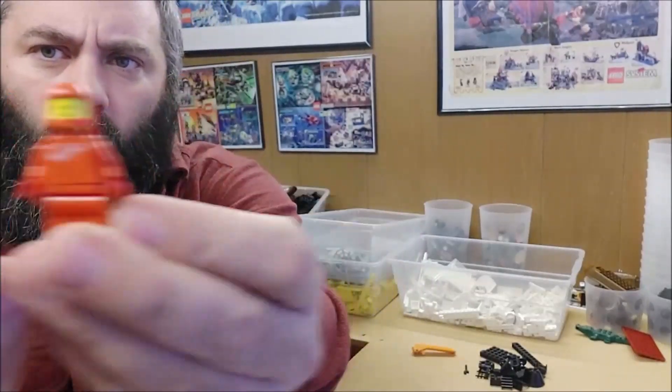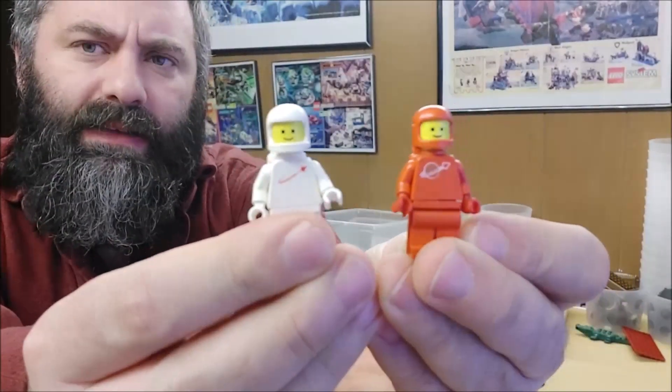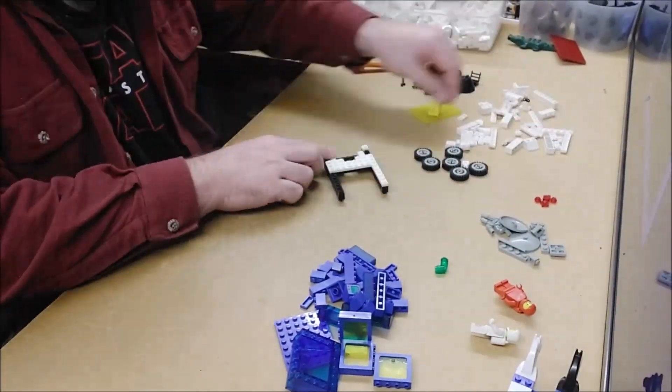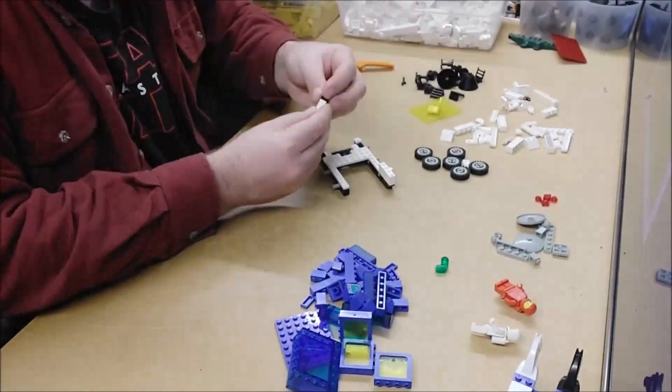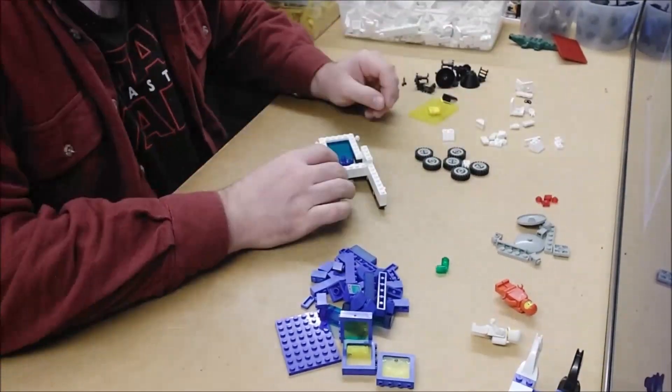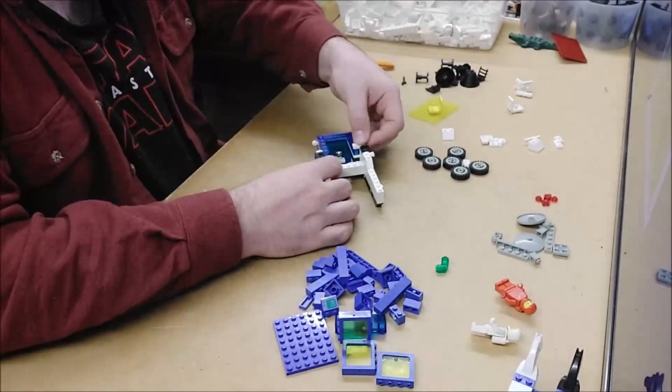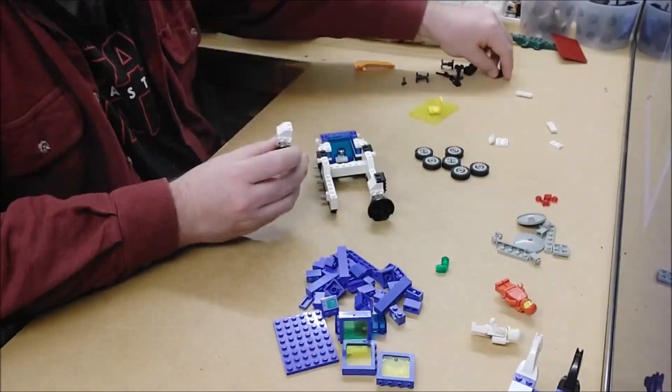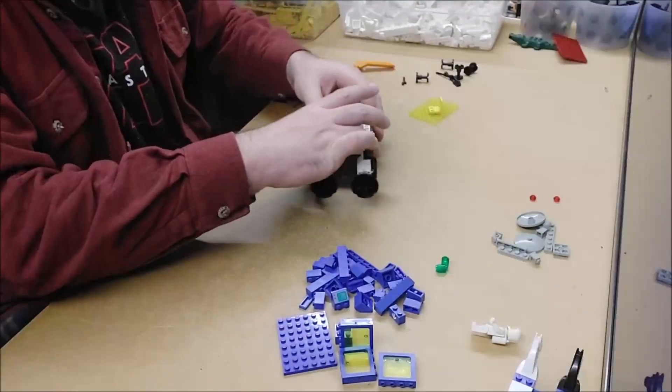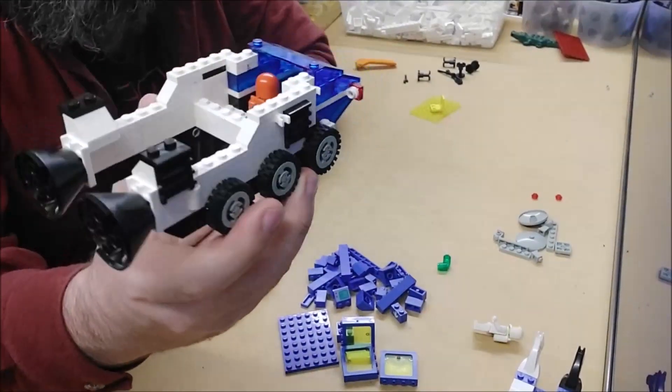Now we'll start with the minifigs. It came with two minifigs: a white classic space and a red classic space, so that's pretty nifty. And there is the base vehicle. It's a six-wheeled, low to the ground, has engines.